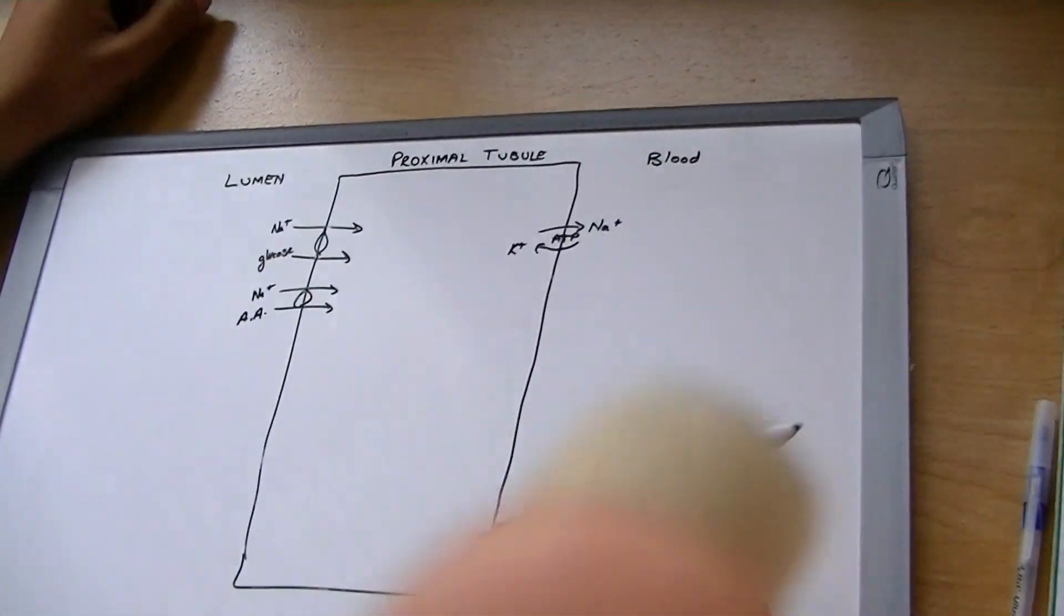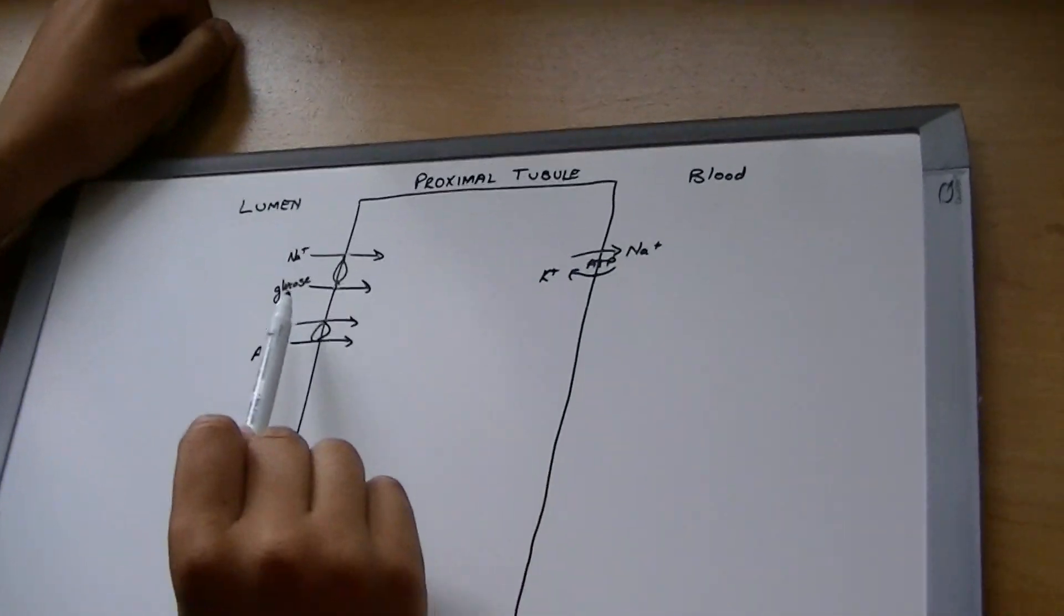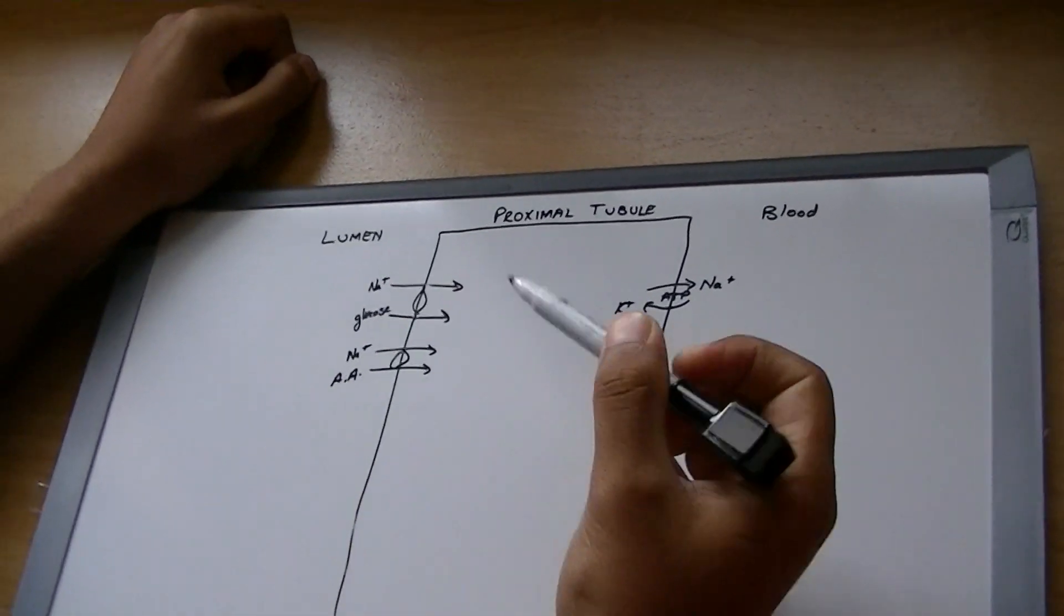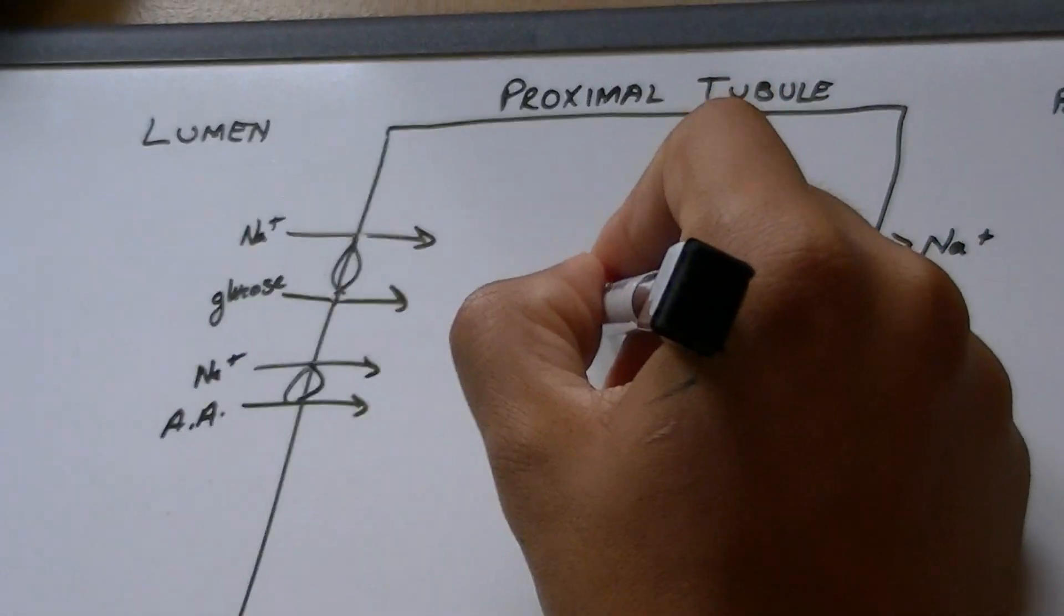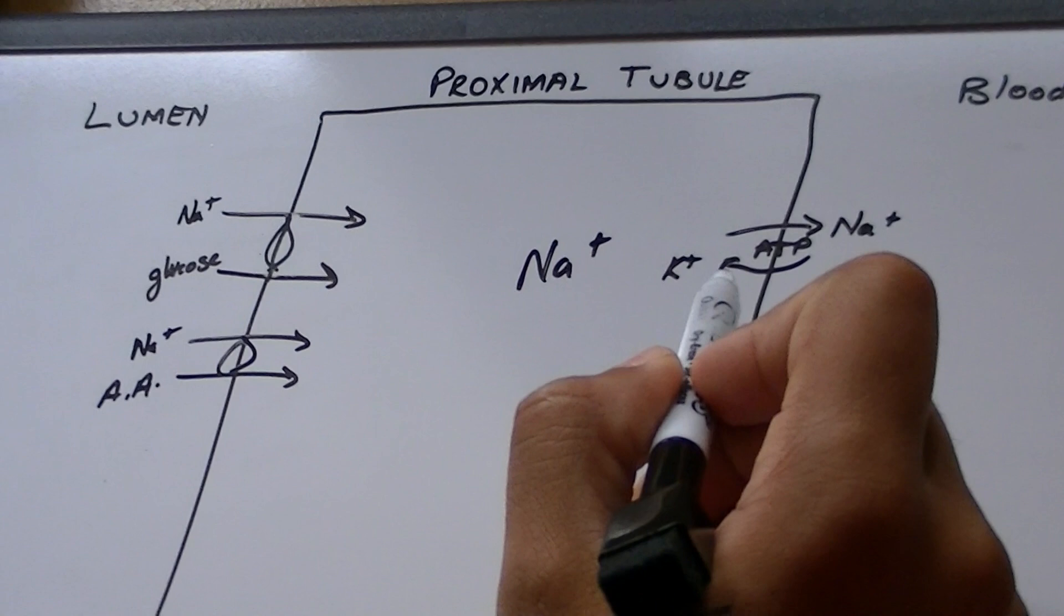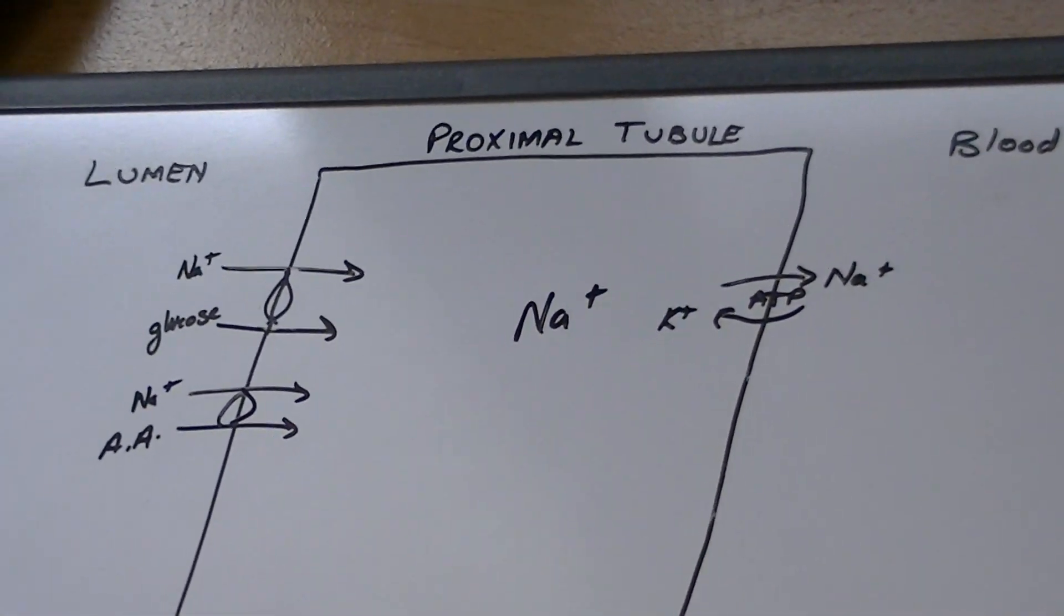Alright, in the proximal tubule, we have sodium being reabsorbed. It's using the glucose transporter to reabsorb itself, as well as the amino acids. Now the sodium that comes into the proximal tubule is sent out using the sodium potassium ATPase, so it goes into the blood and is reabsorbed.